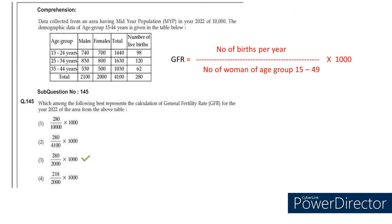Now coming to the next question — General Fertility Rate — they are asking us to calculate the GFR. The formula for GFR is: number of births per year in the numerator divided by number of women of age group 15 to 49, multiplied by 1000. In the numerator, it will be 280 total births, divided by total number of females in age group 15 to 49, which is around 2000. So 280 divided by 2000 multiplied by 1000. The answer is the third option.